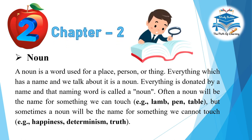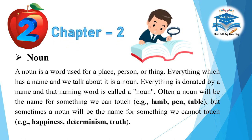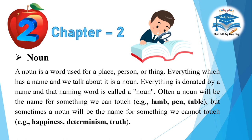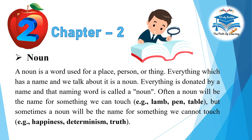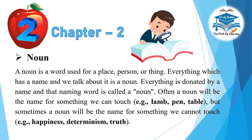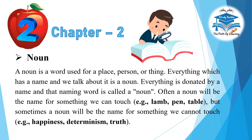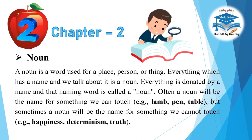Chapter 2: Noun. A noun is a word used for a place, person, or thing. Everything which has a name and we talk about it is a noun. Everything is denoted by a name, and that naming word is called a noun.